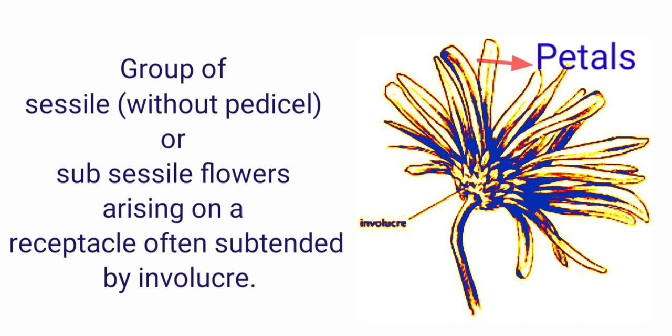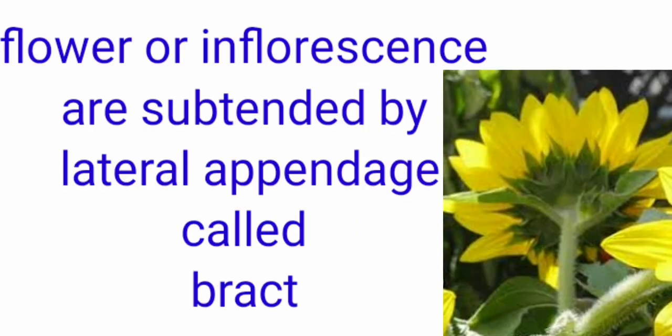As I said, the flower or inflorescence are subtended by a lateral appendages that resembles the leaf like structure is called as bract. Here in the sunflower you could find the green leaf like structure that is called as bract.